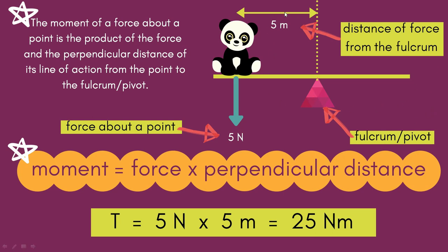Looking at the picture, you would see that Mr. Panda is 5 meters away from the fulcrum. Mr. Panda has a weight of 5 Newtons. To calculate the moment that will cause this lever to turn to the left, you multiply 5 Newtons by 5 meters to get 25 Newton meters. That will be the turning moment.